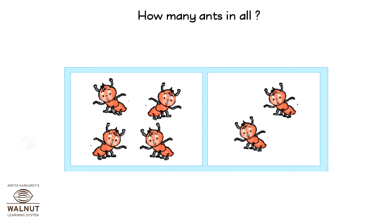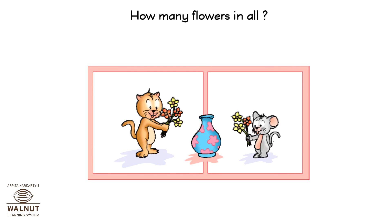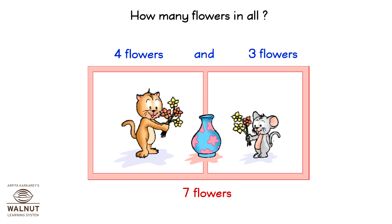How many ants in all? Four ants and two ants is six ants. Four flowers and three flowers is seven flowers.